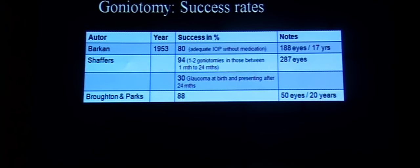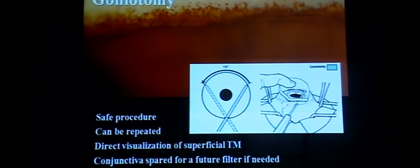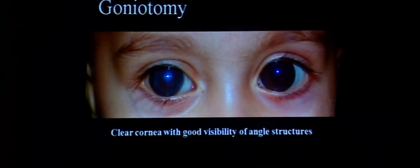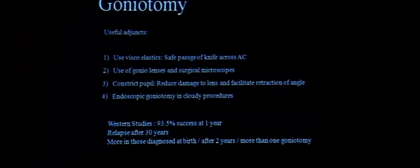Clear cornea is a prerequisite for a good goniotomy. The use of viscoelastics, gonio lenses, and surgical microscopes have enhanced surgical outcomes. Pilocarpine can be used before and after surgery. Endoscopic goniotomy has also been tried. However, the biggest limitation in the Indian scenario is that most patients present with cloudy corneas, decreasing the viability of goniotomy.